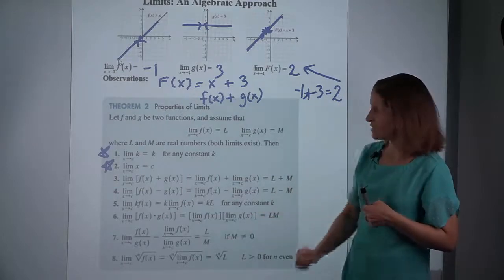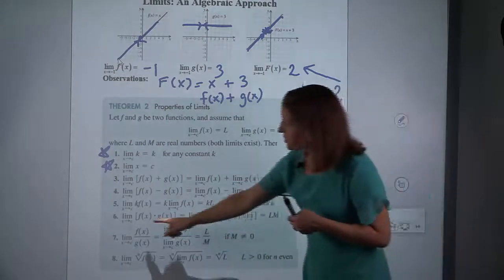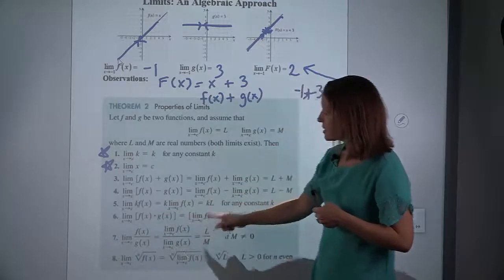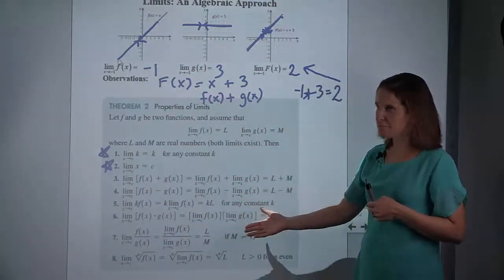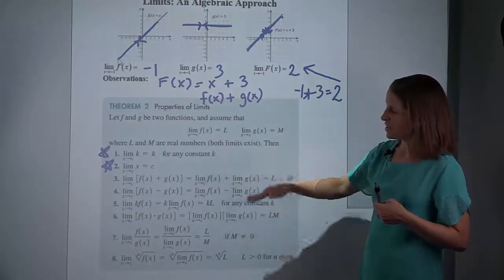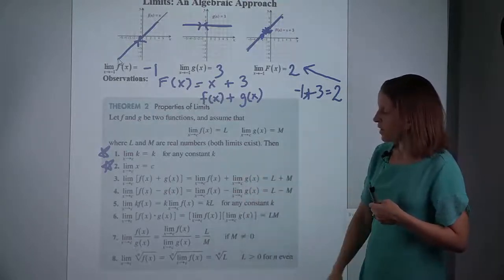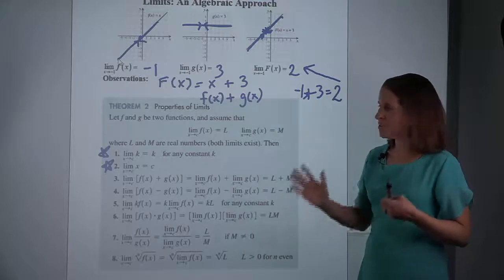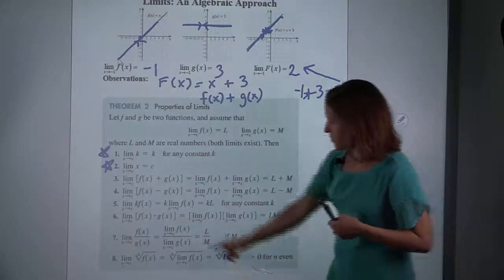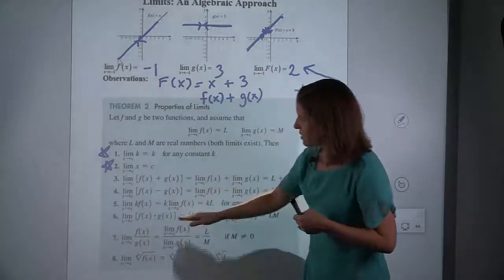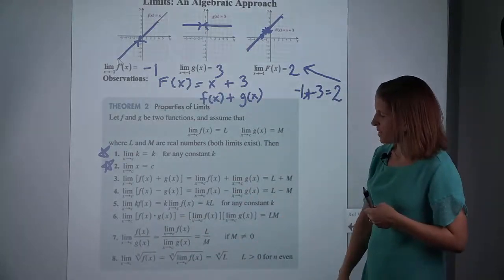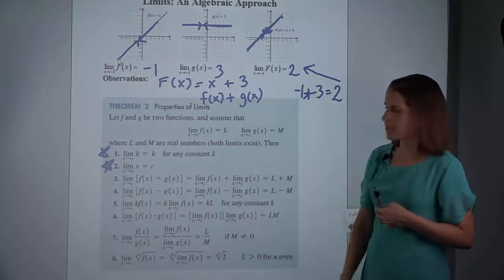The sixth one says if you have two things that are multiplied together, you could take the limit of each piece and then multiply them. You see a running theme here with addition, subtraction, and multiplication. Division as well, as long as you don't divide by zero — if you have the limit of a fraction, it's the limit of the numerator divided by the limit of the denominator, but you have to make sure the denominator is not zero.